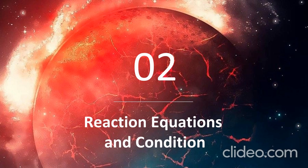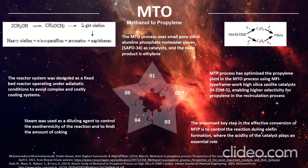Moving on to reaction equations and conditions. For MTO, the process from methanol to propylene uses small-pore silicoaluminophosphate molecular sieve SAPO-34 as catalyst, with the main product being ethylene. The MTP process has optimized propylene yield using MFI-type framework high-silica zeolite catalyst HZSM-5, enabling higher selectivity for propylene. The acidity of the catalyst plays an essential role in controlling olefin formation. Steam was used as a diluting agent to control the exothermicity of the reaction and limit coking. The reactor system was designed as a fixed-bed reactor operating under adiabatic conditions to avoid complex cooling systems.